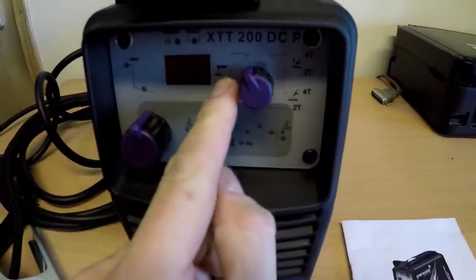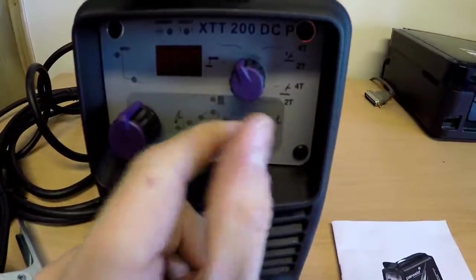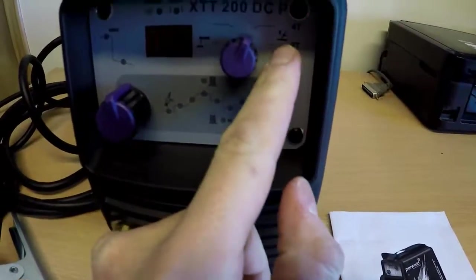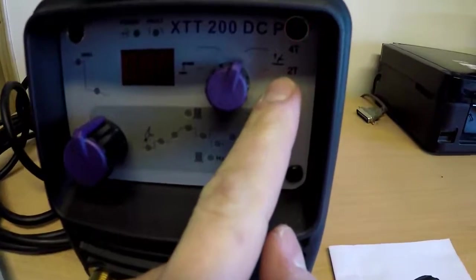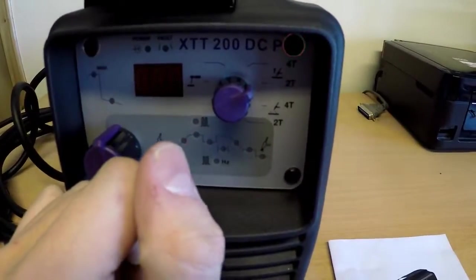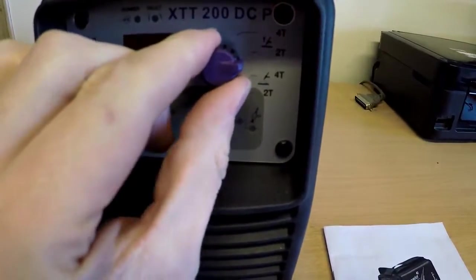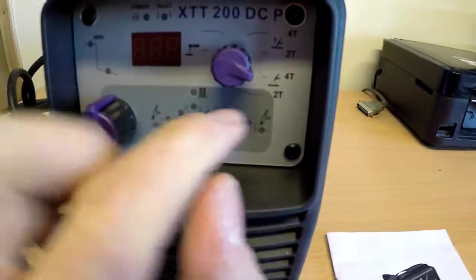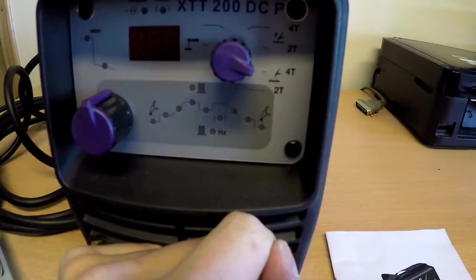So over here is stick welding so you can do normal MMA welding with it. Over here you've got lift TIG function both in 4 trigger and 2 trigger mode and then you've also got HF start for the welding as well, again both in 4 trigger and 2 trigger mode.